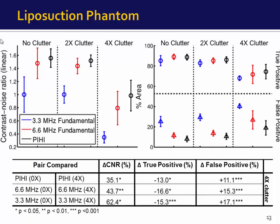Looking at true positive and false positive areas, with the addition of clutter the true positive area decreased and the false positive area increased. The decrease in true positive area was smallest for pulse inversion tracking at minus 13 percent, compared to minus 15 to 16 percent for fundamental tracking. For false positive area, pulse inversion saw an 11 percent increase compared to a 15 to 70 percent increase for fundamental tracking.